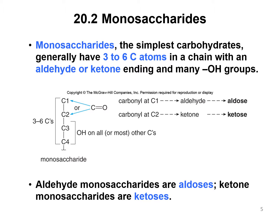Monosaccharides, the simplest carbohydrates, generally have three to six carbon atoms in a chain with either an aldehyde or ketone and many hydroxyl groups along the carbon chain. A carbonyl at C1 is an aldehyde, described as an aldose. If we have a carbonyl at C2, we have a ketone, referred to as a ketose. Aldehyde monosaccharides are aldoses, and ketone monosaccharides are ketoses. You should be able to classify a given structure as either an aldose or a ketose.